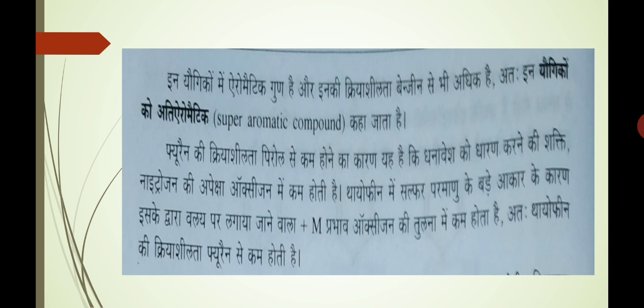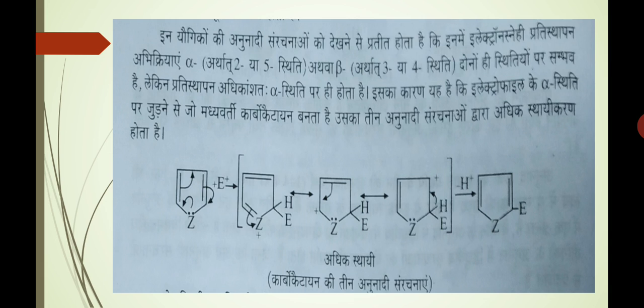In yogikon mein aromatic properties hoti hain aur inki kriyashilata benzene se adhik hoti hai — in yogikon ko hum super aromatic compounds kehte hain. Furan ki kriyashilata pyrrole se kam hone ka kaaran yeh hai ki positive charge ko dharan karne ki shakti nitrogen ki, oxygen mein kam hoti hai. Thiophene mein sulfur atom ke bade aakaar ke kaaran is dwara jo ring par lagane wala +M effect oxygen ki tulna mein kam hoga, isliye thiophene ki kriyashilata furan se kam hoti hai.